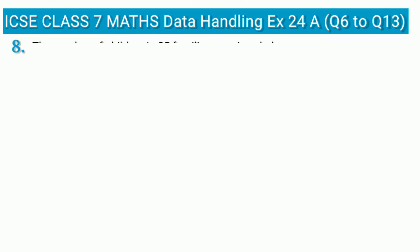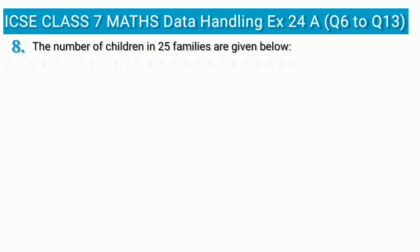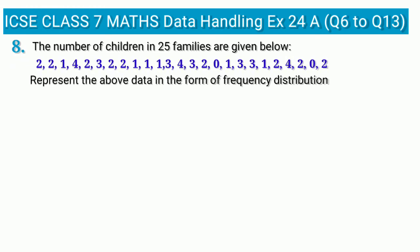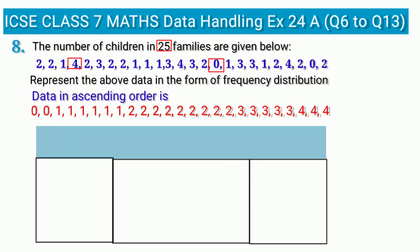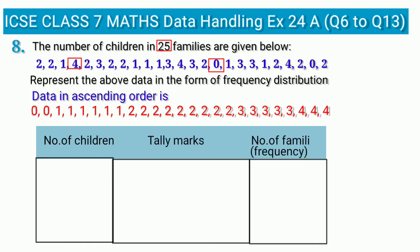Question 8: The number of children in 25 families are given — represent the data as a frequency distribution. The lowest number of children is 0 and the highest is 4. We arrange the data in ascending order and make a frequency distribution table with three columns: number of children, tally marks, and number of families (frequency). The first column lists values 0, 1, 2, 3, 4.